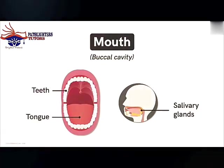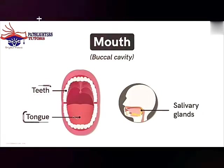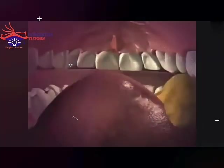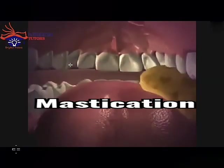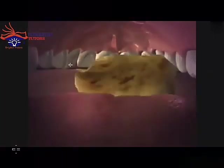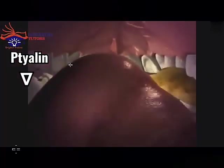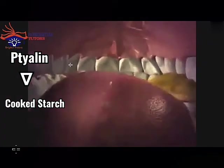These parts carry out effective breaking down and digestion of food. We will look at the salivary gland in detail under digestive glands. In this video, we'll focus on what happens in the mouth and in the esophagus during digestion. In the mouth, the teeth aid in breaking down food into smaller pieces — this process is called mastication. The tongue aids in mixing the food with saliva, and the salivary glands release an enzyme called ptyalin, which acts on cooked starch and converts it into maltose.